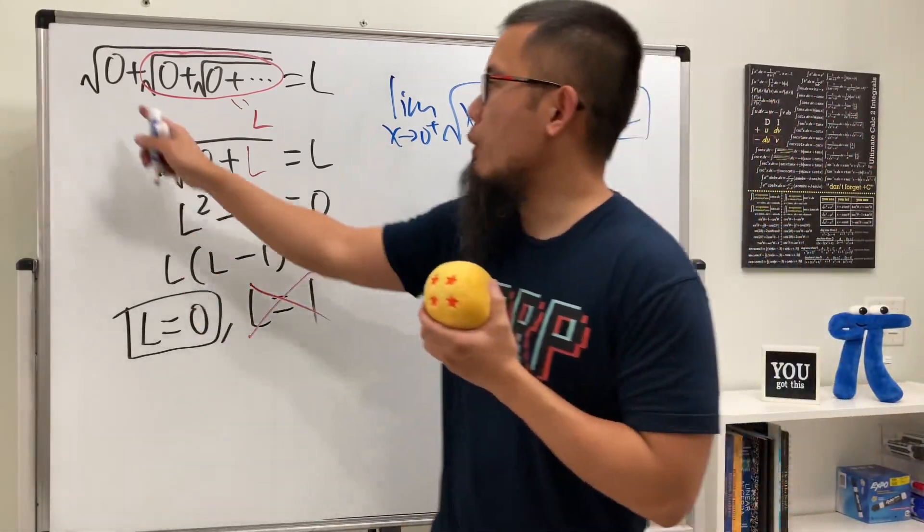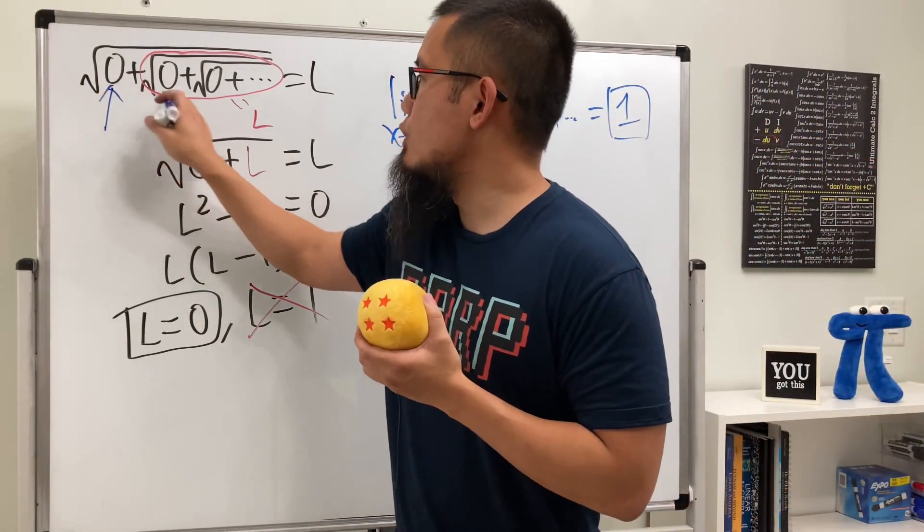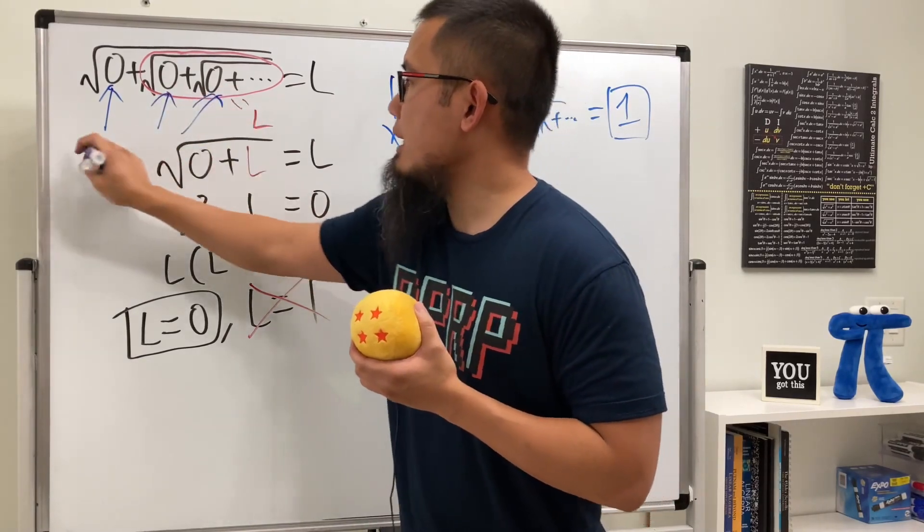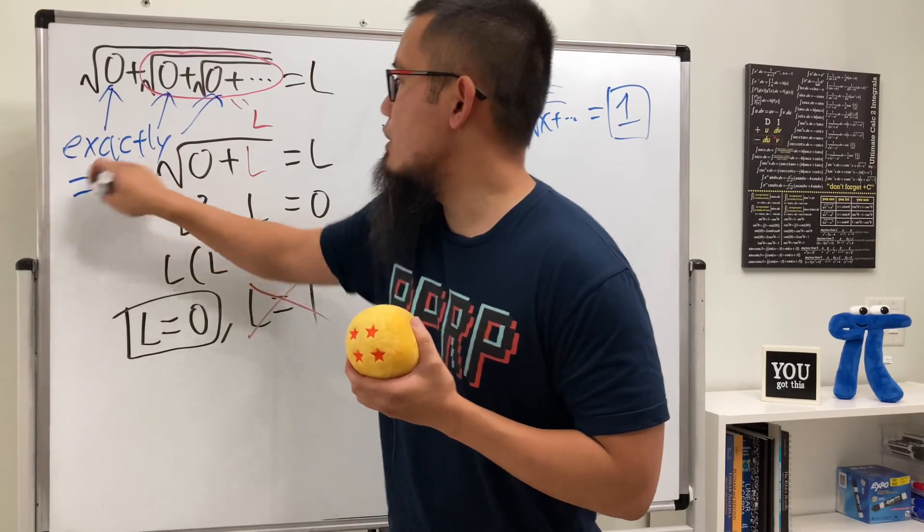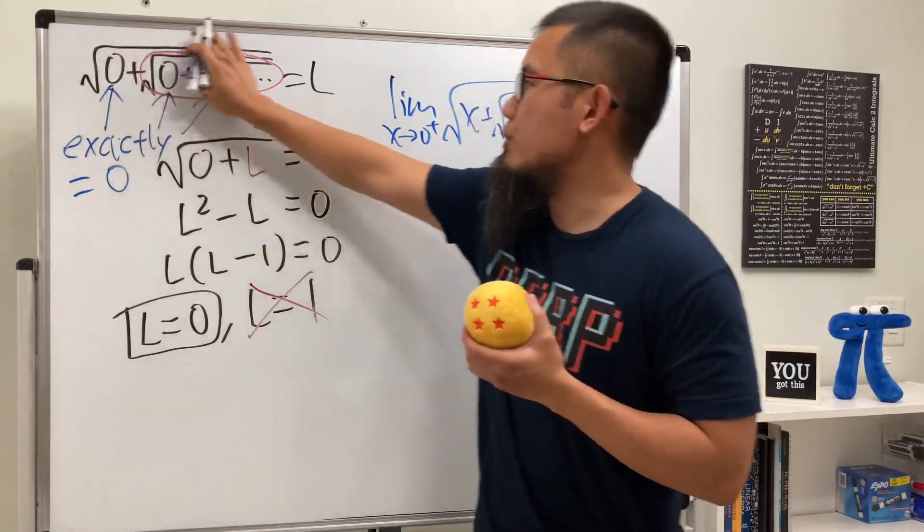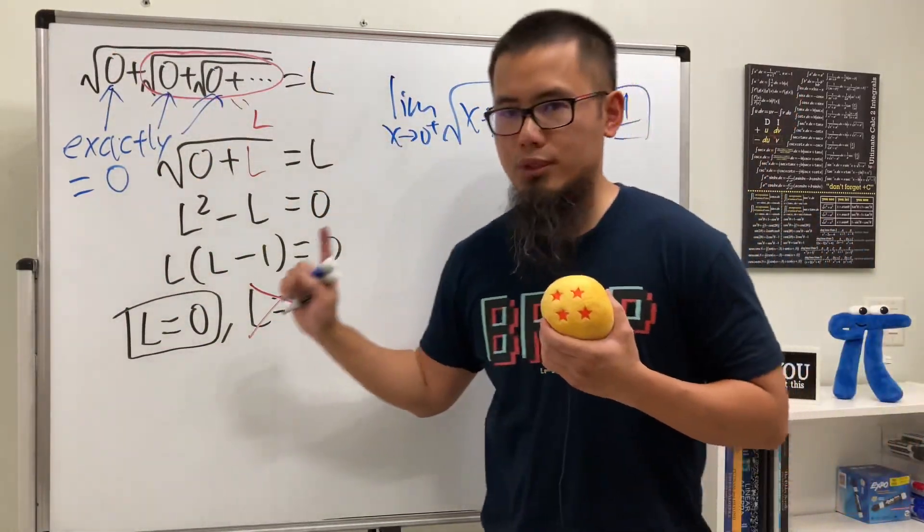They are exactly, exactly equal to zero. So no matter how many times you do this, it will always be equal to zero.